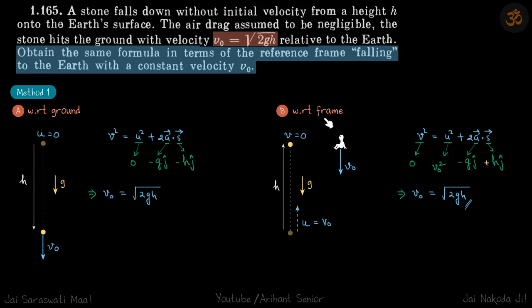Now with respect to the frame, let's say the frame is moving downwards with velocity v₀. So initially the particle will appear to come up with the same velocity v₀. This is the initial velocity of the particle with respect to the reference frame which is v₀ upwards.